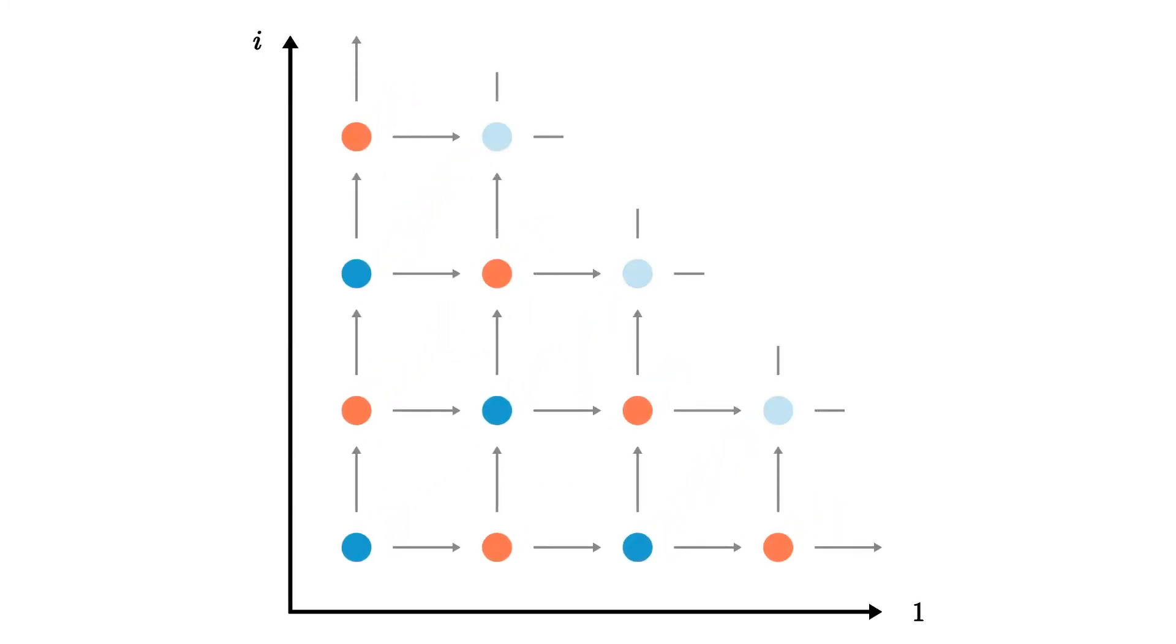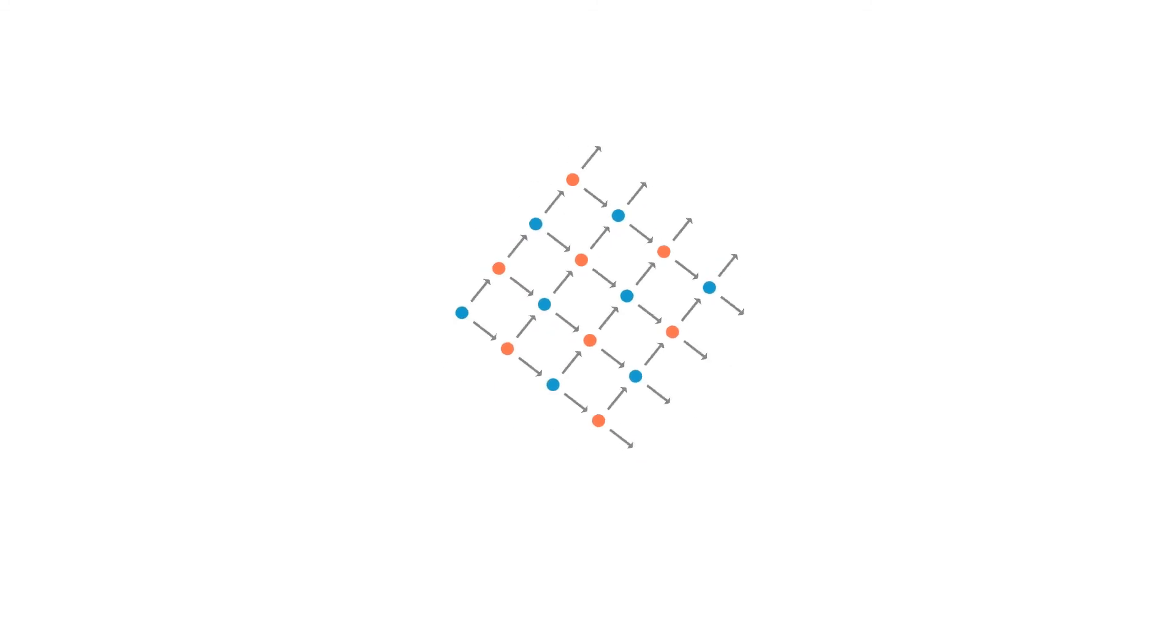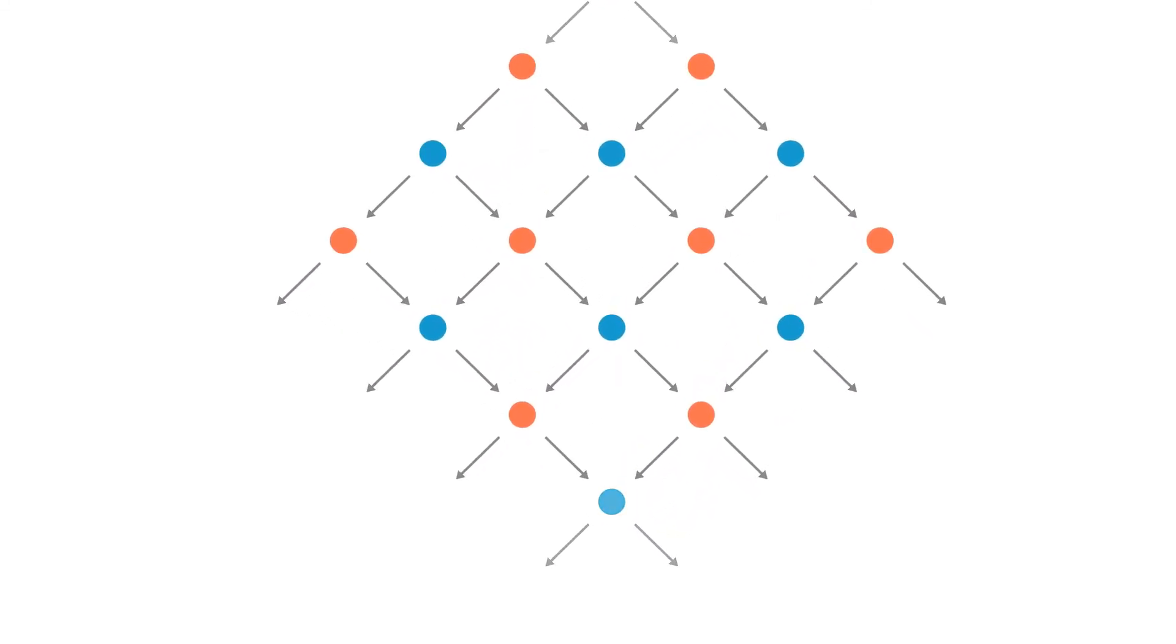The points form a checkerboard pattern shown in blue and red here. Each blue point depends on two red points and each red point depends on two blue points. When looked at in spacetime coordinates, these colors form layers and you can see that you need to go back two time steps before you find a point at the same space coordinates.